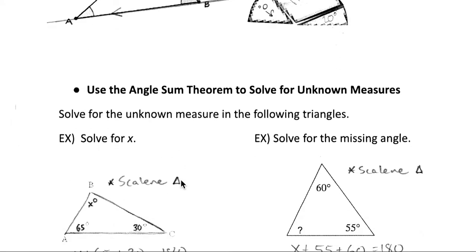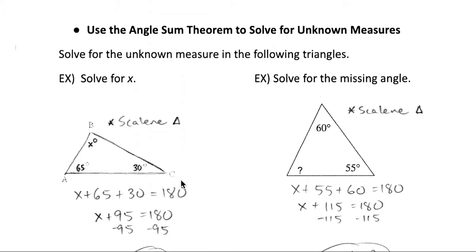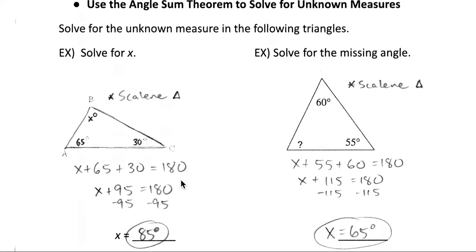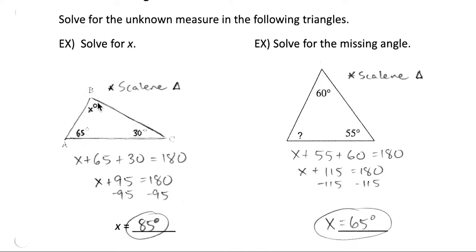Let's practice using it, setting up some equations, and solving for some unknown measures. In this first example, we're only missing angle B. We know angle A and C measures, so we can combine those together and subtract that from 180 to figure out what's missing. So to start off with, we could say X plus 65 plus 30 equals 180.